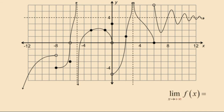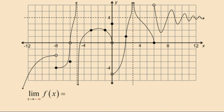Now let's take a look at the end behavior of our function. Let's find the limit as x approaches positive infinity of f of x. Notice that as x increases without bound the function values approach 4. Hence f has a horizontal asymptote of y equal 4, and therefore the limit as x approaches positive infinity of f of x is equal to 4. Now let's find the limit as x approaches negative infinity of f of x. Notice that as x decreases without bound the function values also decrease without bound. Therefore the limit as x approaches negative infinity of f of x is equal to negative infinity.